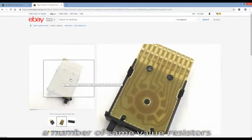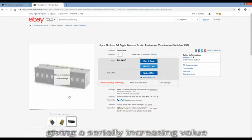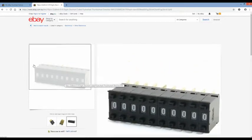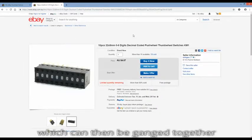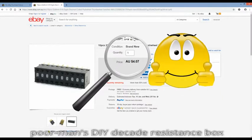You could have a number of the same value resistors that would produce a serially increasing value, and each thumb wheel or decade can then be ganged together, giving the poor man's DIY decade resistance box.